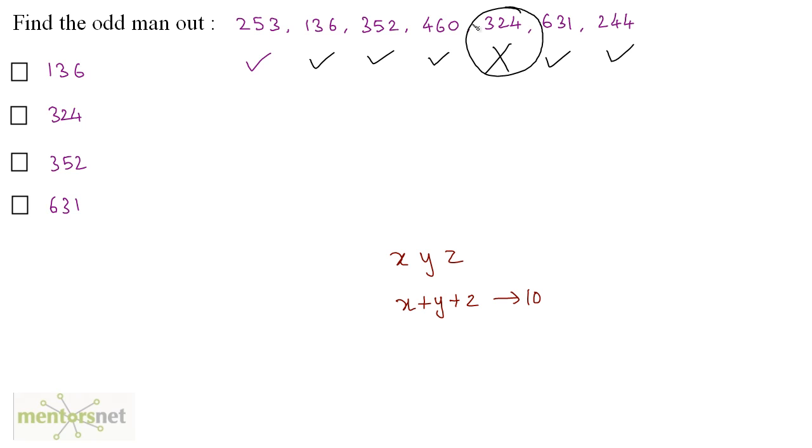So we found out what's the odd man out. 324. Tricky, huh?